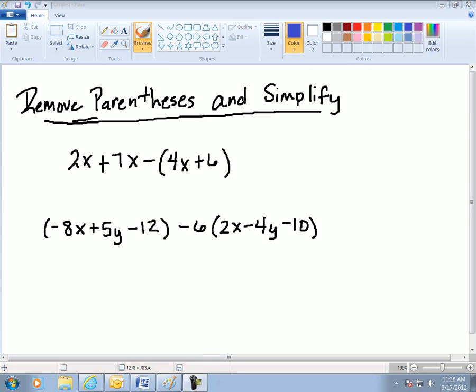In this video we're going to talk about some examples of where we remove parentheses and simplify. So all we're going to do is get rid of these parentheses and then combine like terms. The main issue is that when you have a negative out here it has to be distributed through the parentheses so you can't leave anything out.